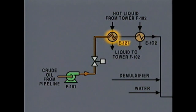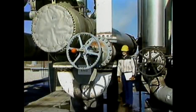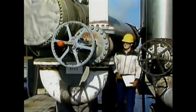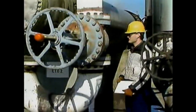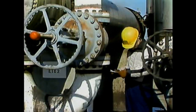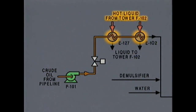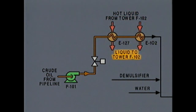From heat exchanger E-127, the oil goes to another heat exchanger labeled E-102. You can find this second heat exchanger by locating the line from the tube side outlet of heat exchanger E-127 and following it to the tube side inlet of heat exchanger E-102. The diagram indicates that the heat added to the oil in the heat exchangers comes from hot liquid from distillation tower F-102. When the liquid leaves the heat exchangers, it returns to the tower.